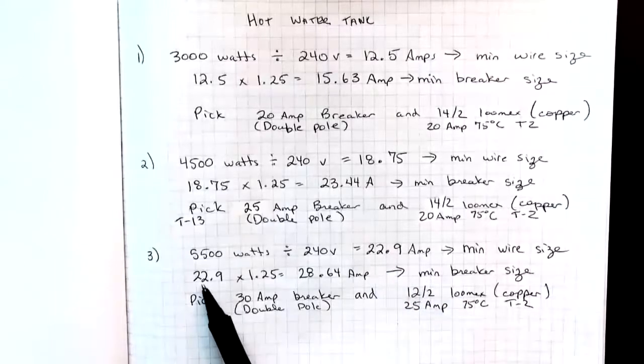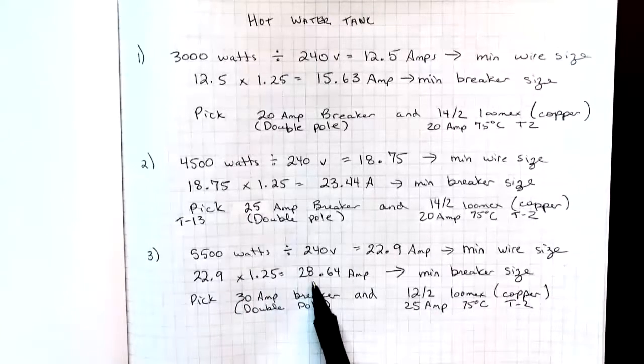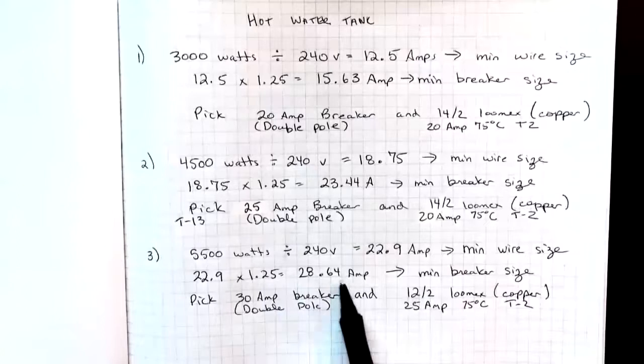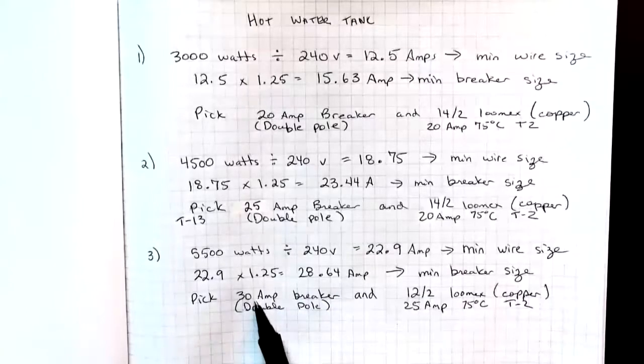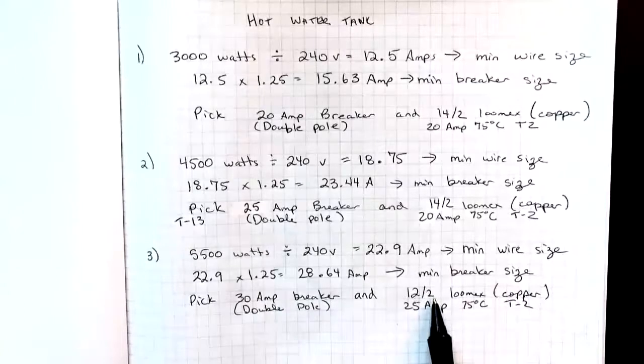And then I take that 22.9 times 1.25 gives me a minimum ampacity for the breaker of 28.64. So I'm going to pick a 30 amp breaker and a 12.2 wire.